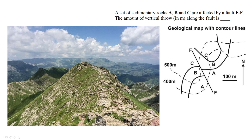Now let's see the outcrop pattern of the bedding plane and the fault plane. If the beds are dipping in this direction and you have a horizontal surface topography, the outcrop pattern which would be produced would be straight lines. But in this case the topography is a sloping ridge. That is why if a bed is dipping this side, the outcrop pattern which is produced is like this — a curved pattern.